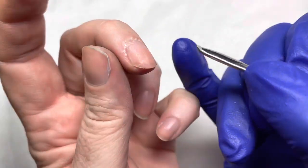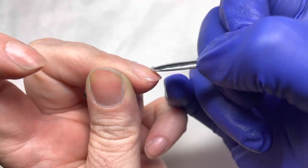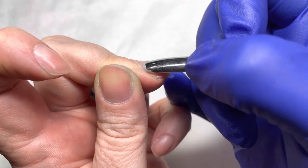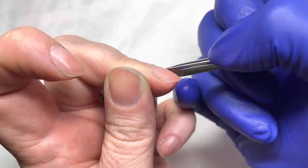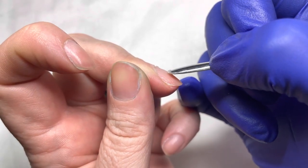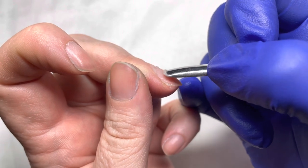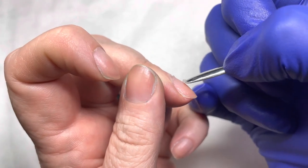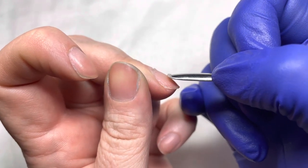You don't have to use a lot of pressure, you just want to hold the pusher at about a 45 degree angle so that it gently lifts and separates. If you find a 45 degree angle isn't gently catching the cuticle, kind of play with the angle of your pusher a little bit.